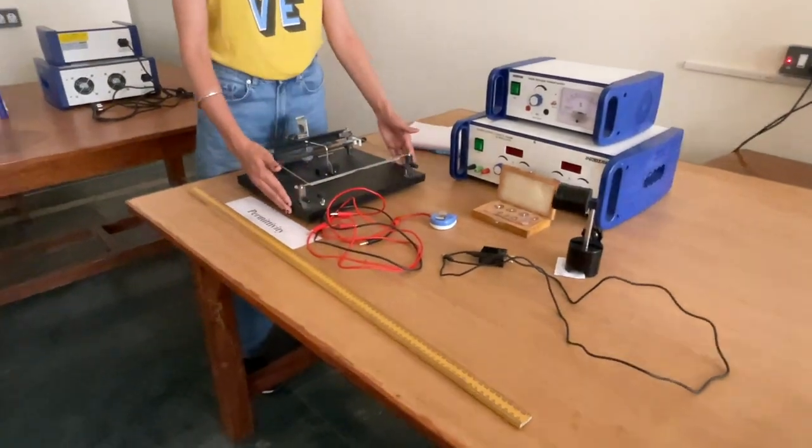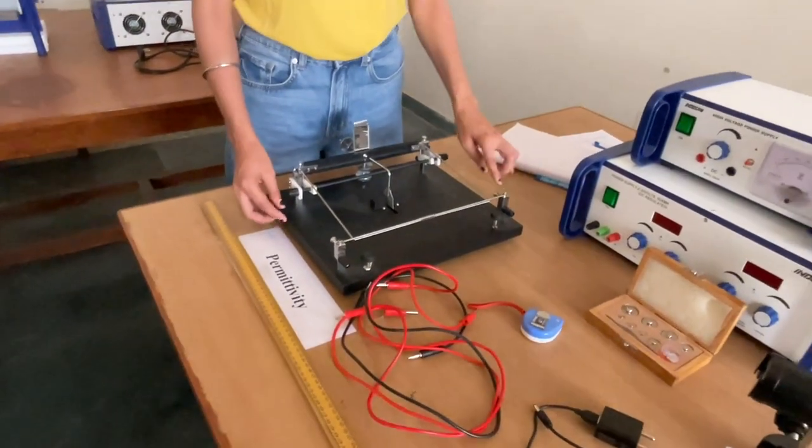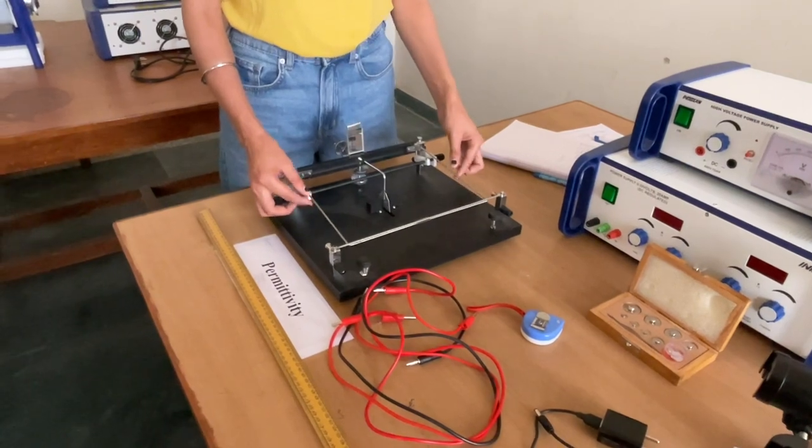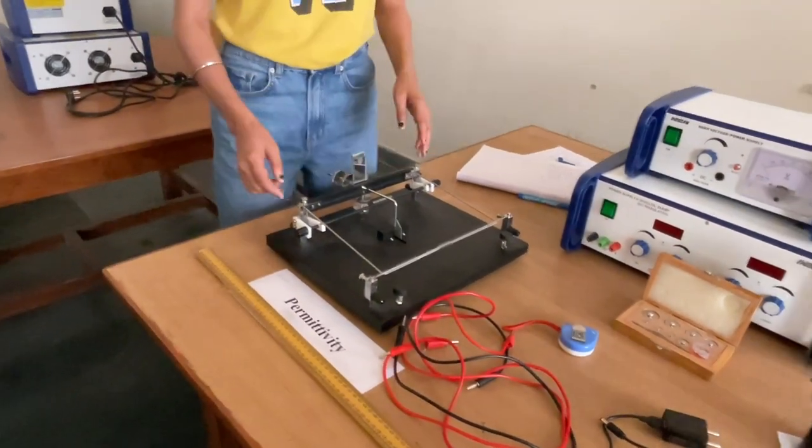The main apparatus of this experiment is the current balance which is a short rod and a U-shaped rod which is attached with a mirror and this is counter-poise.